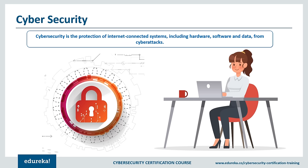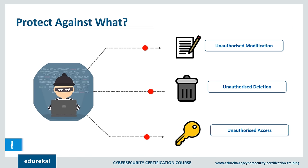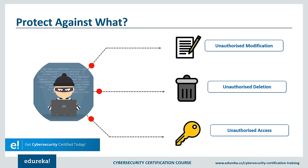After looking at all sorts of cyber attacks, breaches of the past, and the sheer amount of data available, we must be thinking there must be some mechanism and protocol to protect us from these attacks. And indeed there is — this is called cyber security. In a computing context, security comprises cyber security and physical security. Both are used by enterprises to protect against unauthorized access to data centers and computerized systems. Information security, designed to maintain the confidentiality, integrity, and availability of data, is a subset of cyber security. Cyber security can help prevent cyber attacks, data breaches, and identity theft, and can aid in risk management. When an organization has a strong sense of network security and an effective incident response plan, it's better able to prevent and mitigate these attacks.